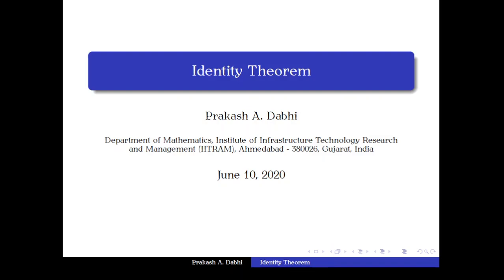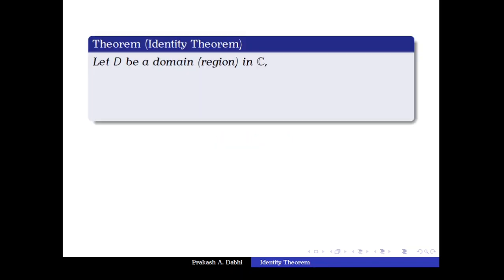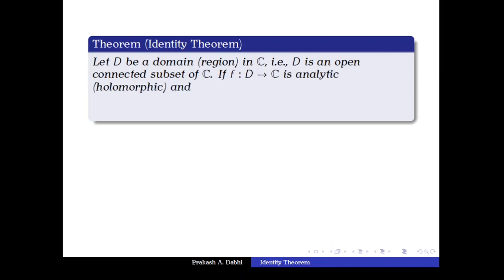We shall discuss the Identity Theorem and some examples based on this Identity Theorem in complex analysis. Let D be a domain or region in ℂ — that is, an open connected subset of ℂ. Both words are used: domain or region. If f is a function on D which is analytic, also called holomorphic.